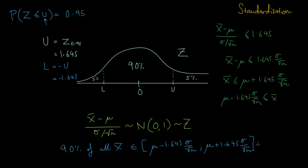This technique — normalizing a random variable, finding the critical values to capture a certain amount of probability, and then using the inverse transformation to convert standard normal values back into values for our distribution — works for any normal variable.